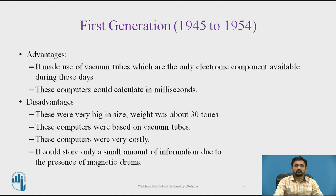As an advantage, first generation computers made use of vacuum tubes, which were the only electronic components available during those days, and could calculate in milliseconds. Disadvantages include very large size, a weight of about 30 tons, significant heating issues due to vacuum tubes, very high cost, and the ability to store only small amounts of information due to the presence of magnetic drums.